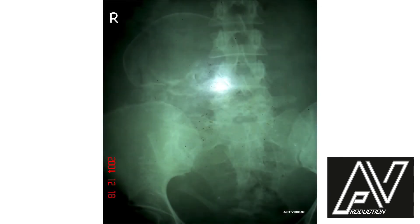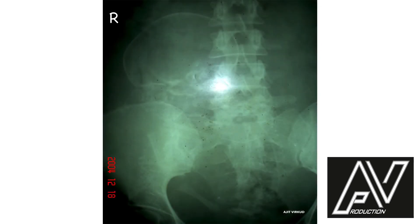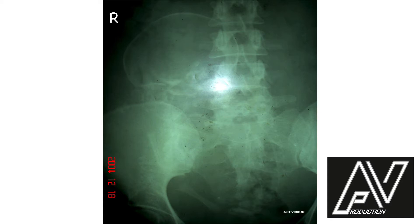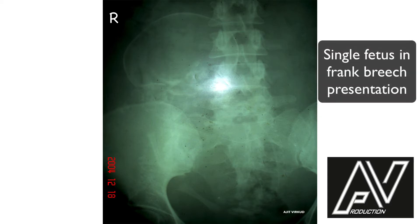This is a plain x-ray of the abdomen and pelvis, AP view, well centralized, well exposed, showing a single fetus in longitudinal lie, flexed attitude. The presentation is breech and the presenting parts are buttocks. The fetal spine is not seen properly because it overlaps with the maternal spine. The head is well flexed. There are no obvious fetal skeletal defects. Therefore, my diagnosis is single fetus in frank breech presentation.